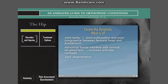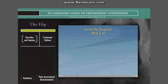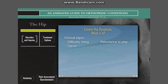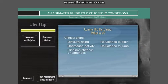Owners typically report a slow, progressive onset of clinical signs that may include difficulty rising, reluctance to play, decreased activity, reluctance to jump, hind limb stiffness or lameness, pain, and a bunny-hopping gait.